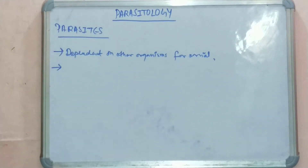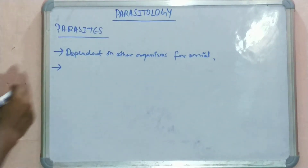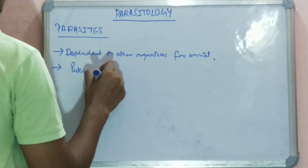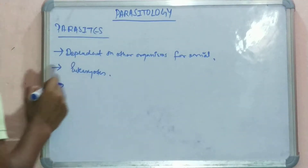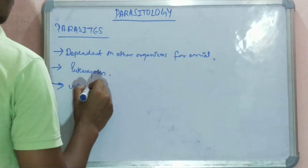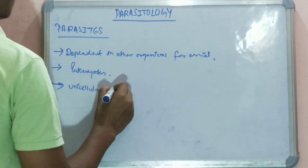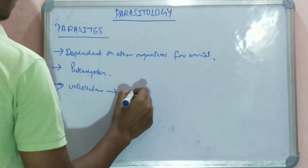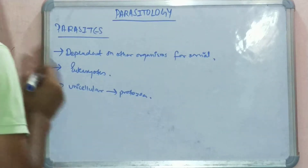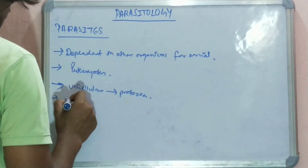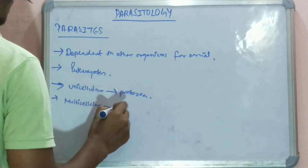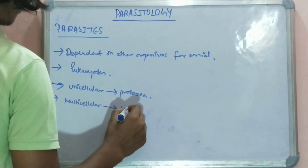Parasites are eukaryotes, as I mentioned with fungi in my previous video. Next, these are unicellular organisms, which counts under protozoa as well, since protozoa is a unicellular organism. Next, parasites can be multicellular as well, in organisms such as certain parasites.